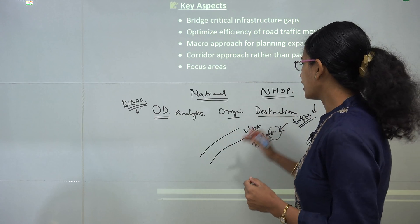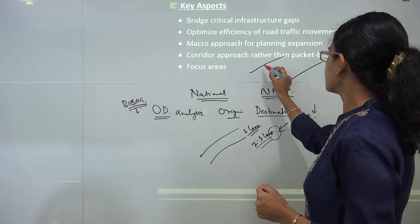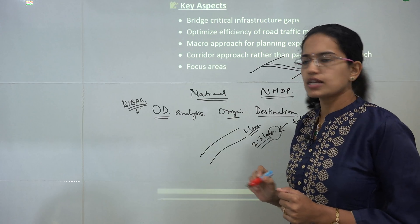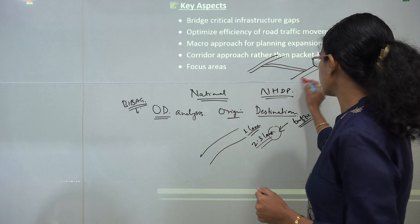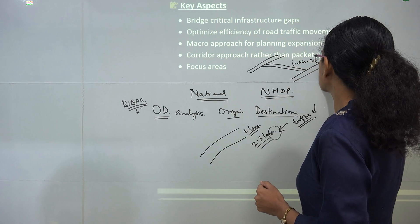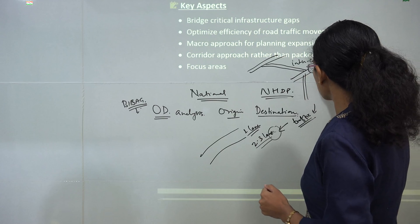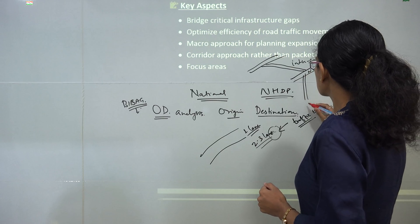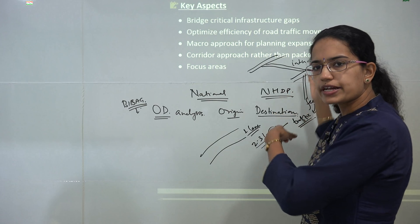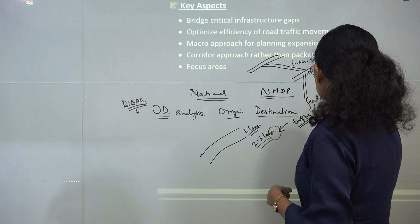Where you have two national corridors running, we would have an inter-corridor connecting these two national corridors — so that's one type of development, the inter-corridor. Again, there would be other corridors which would be feeding this national corridor and those would be known as feeder corridors, as they are providing access to the national corridor.